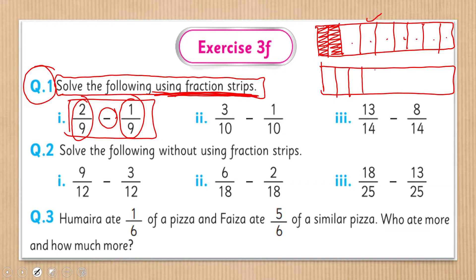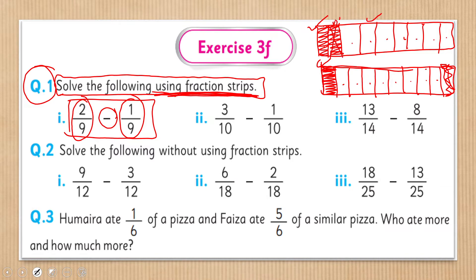दूसरी strip के भी 9 parts हैं: 1, 2, 3, 4, 5, 6, 7, 8, 9 — ध्यान रखें 9 ही बनाने हैं, 10 नहीं। इस strip से 1/9 represent करेंगे। Strips use करते हुए subtract करना है — 1/9 part में से इसको cross कर दें। तो आपके पास result में 1/9 बच जाएगा।